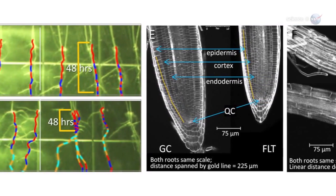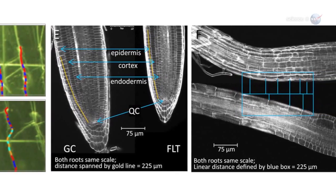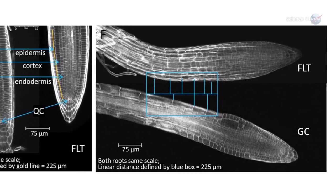We expected to find auxin in the gravity-sensing cells at the tip of the roots. Instead, it showed up in the hypocotyls, the stem-like region between the roots and leaves, she says.